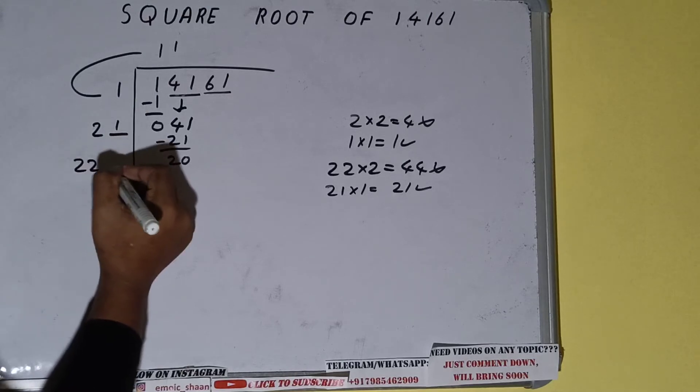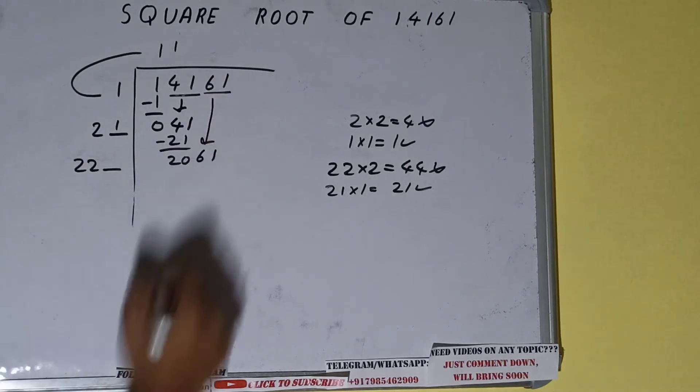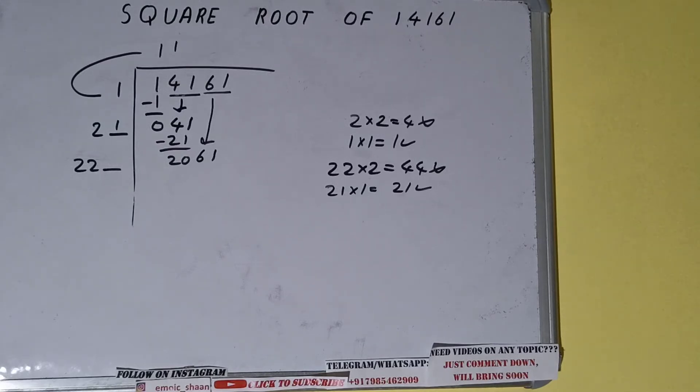Write it here and keep a digit extra, and this number we need to make it big. So bring the next pair down and it will become as 2061. Now we can compare this 22 with this 206.